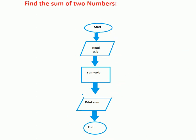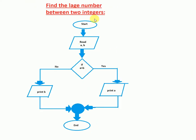Another example: find the largest number between two integers. Start, then input two integers. We don't know which integer is smaller and which is larger, so here we use two conditions. Use the diamond shape: is A greater than B? If yes, print A. If no, print B. These two output paths connect together, and then we reach the end symbol. The start and end symbols are the same.